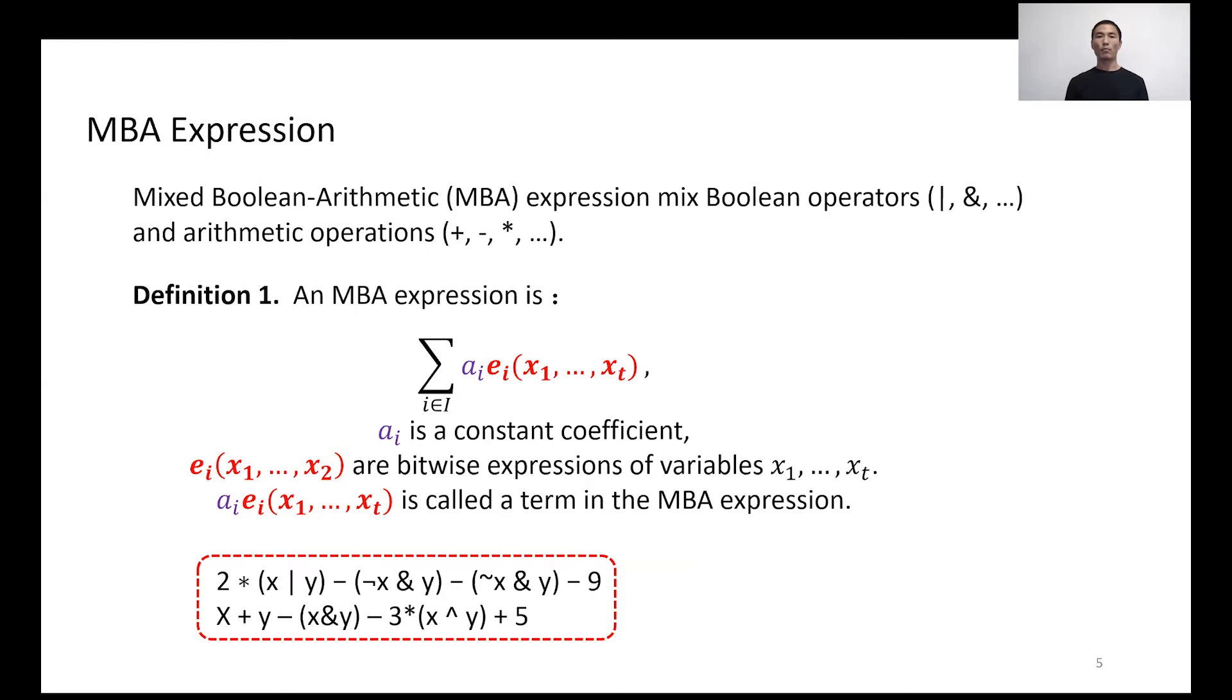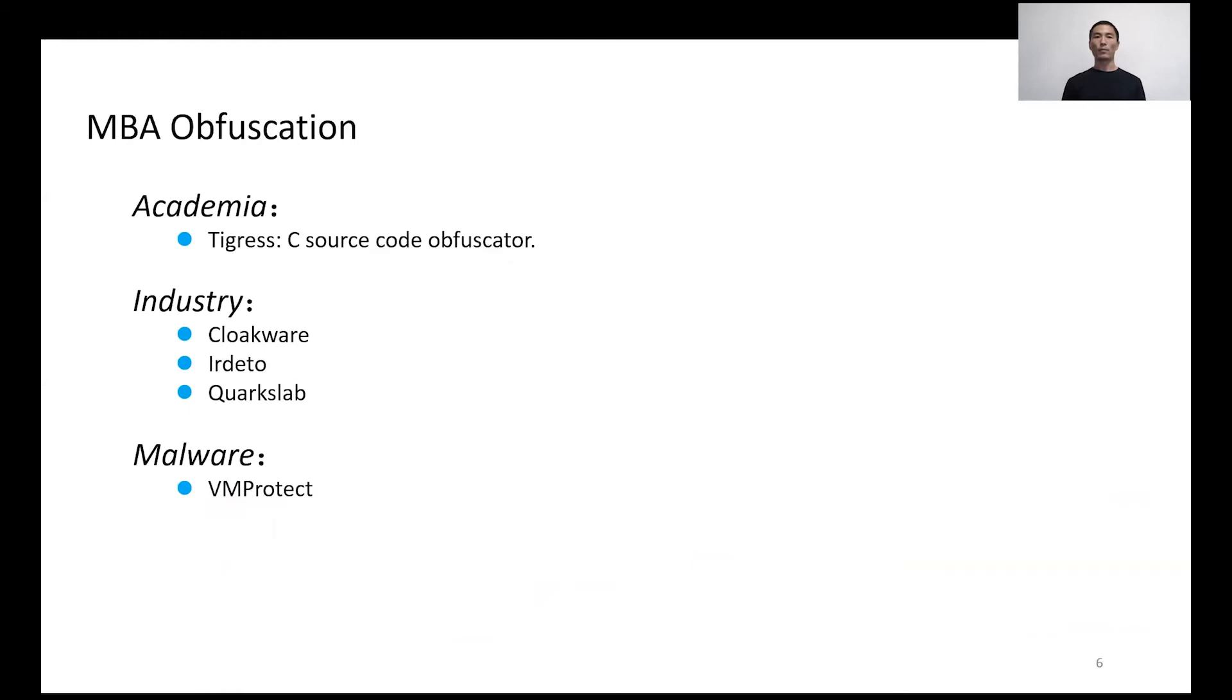Due to the simplicity and the strength of the mathematical foundation, multiple academic tools and industry projects have embedded MBA obfuscation into their products, such as Tigress, an academic C source code obfuscator. Code virtualizer and others include MBA obfuscation in their commercial products. Furthermore, we noticed that MBA is used in malware and virtualization obfuscation, such as VMProtect.